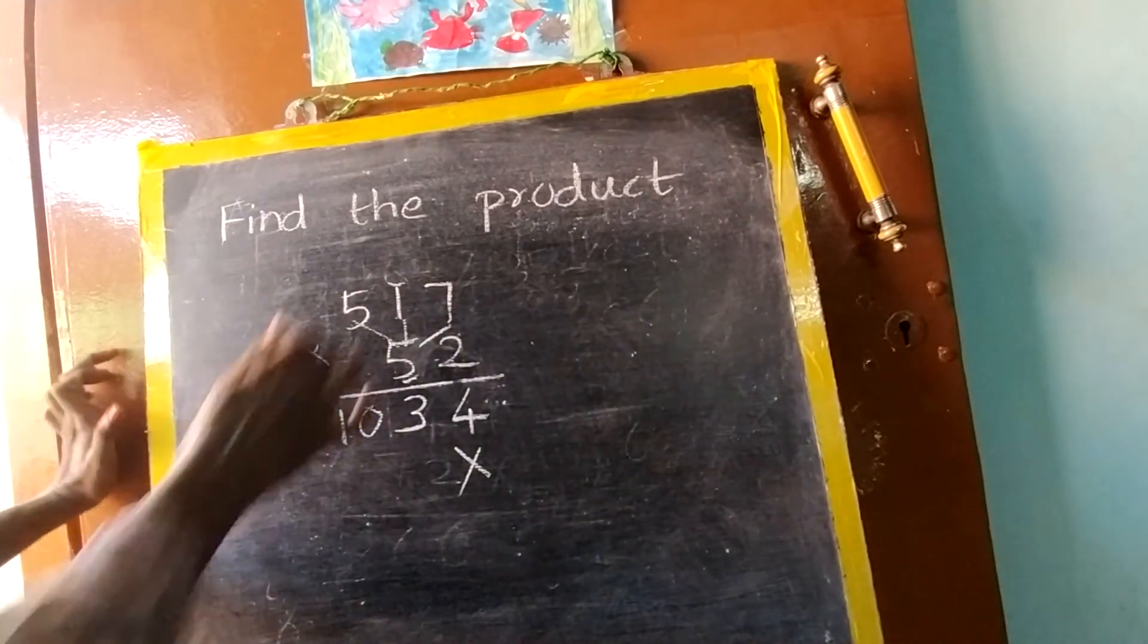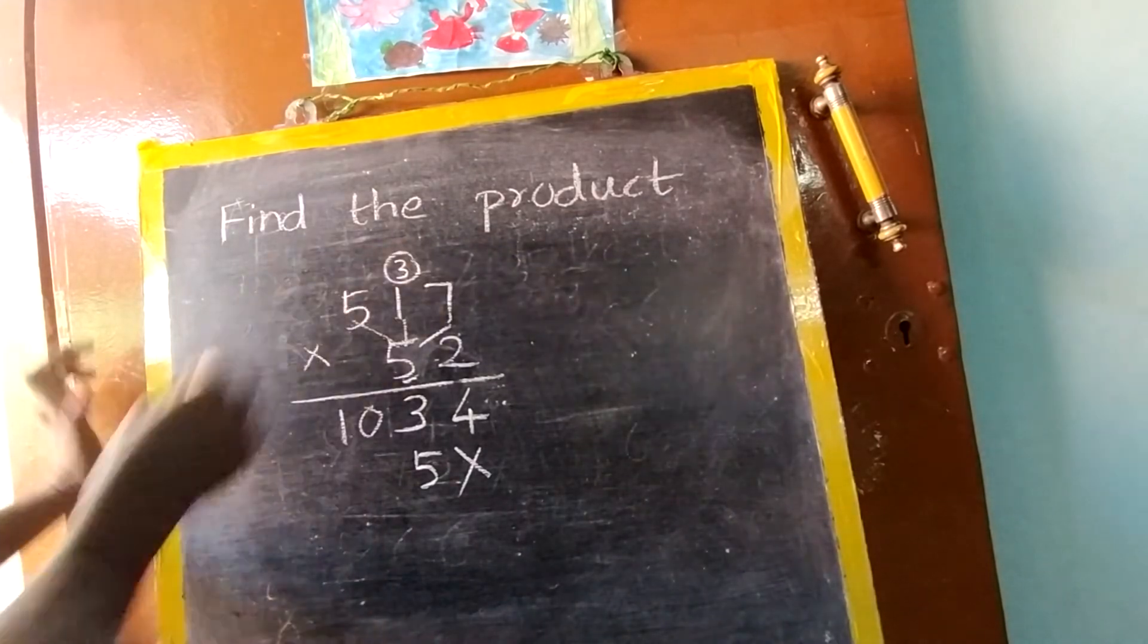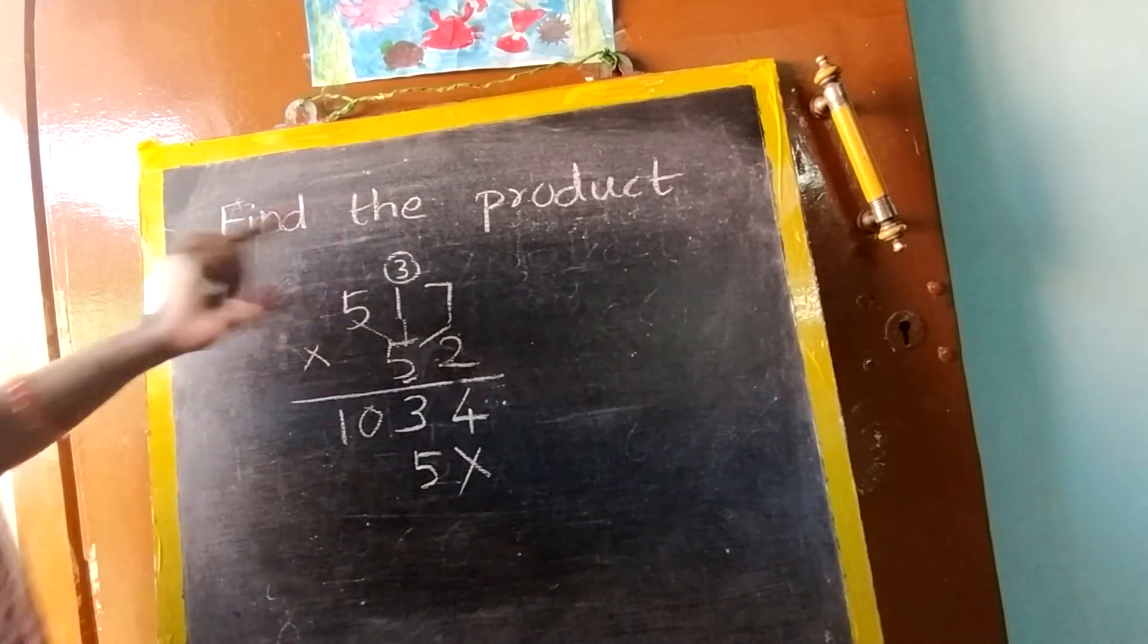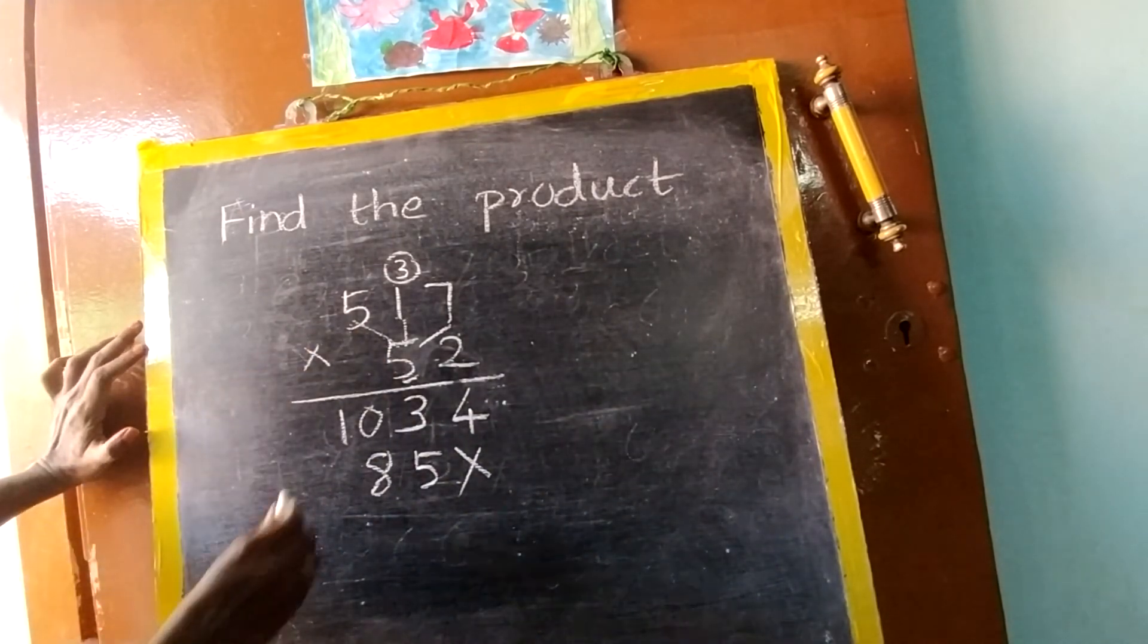So 5, 7's are 35. So 5 here, 3 here. 5, 1's are 5. 5 plus 3, 8. Next with 5. 5, 5's are 25.